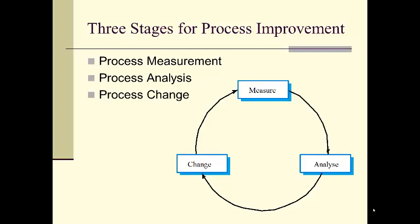Three stages for process improvement: one is measurement — determine what the process is doing and how well it's doing it. Two is analyze — is it actually achieving what we want it to achieve? And then change it so that it actually does. This should look familiar; it resembles Deming's wheel that we talked about in the quality lecture.